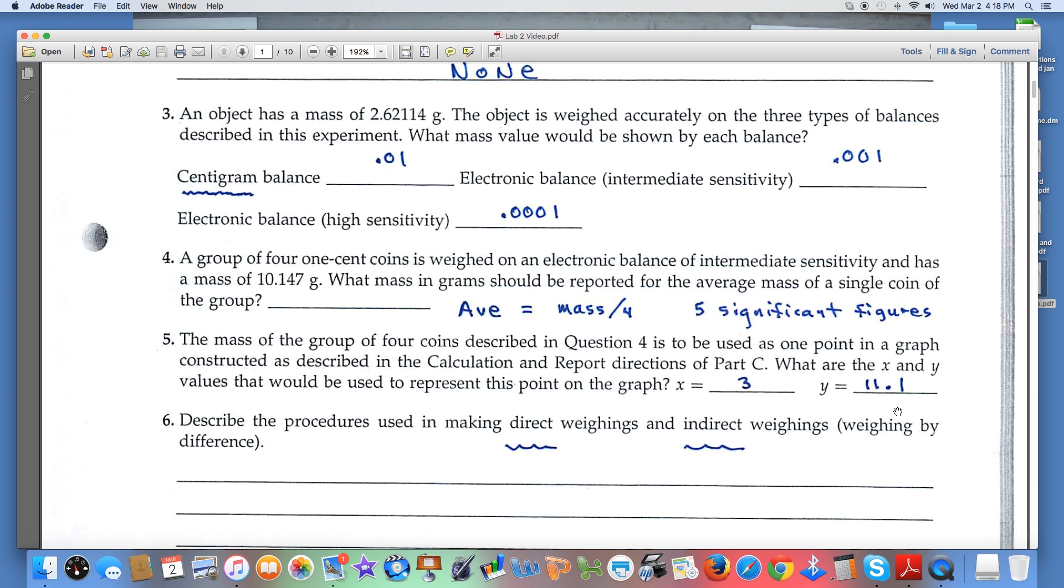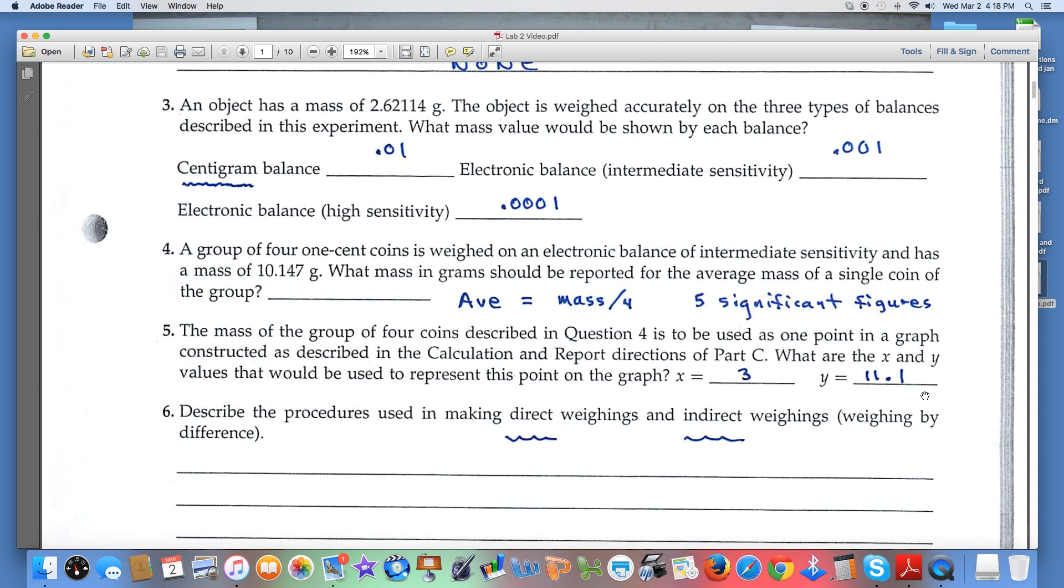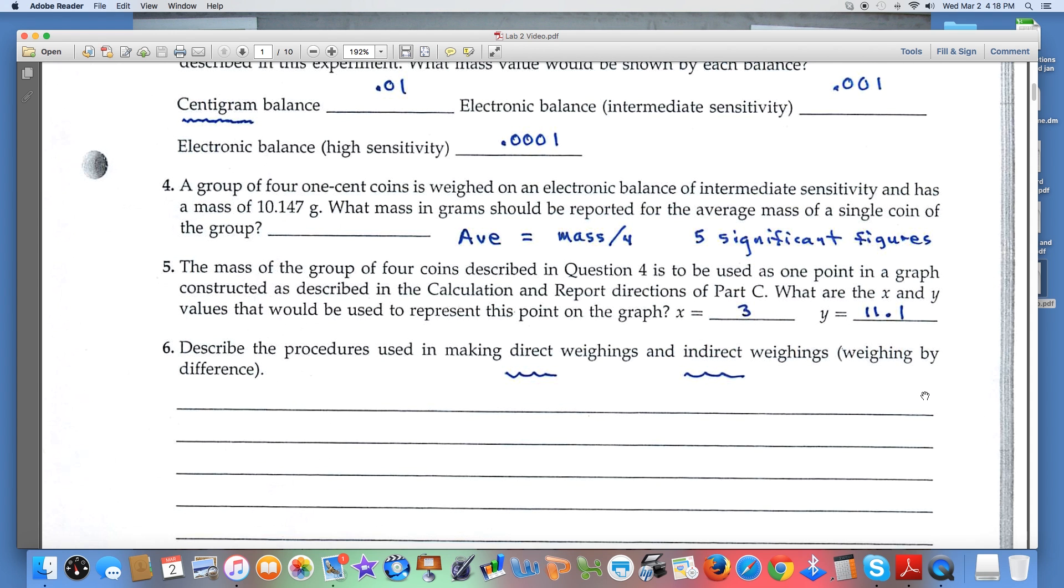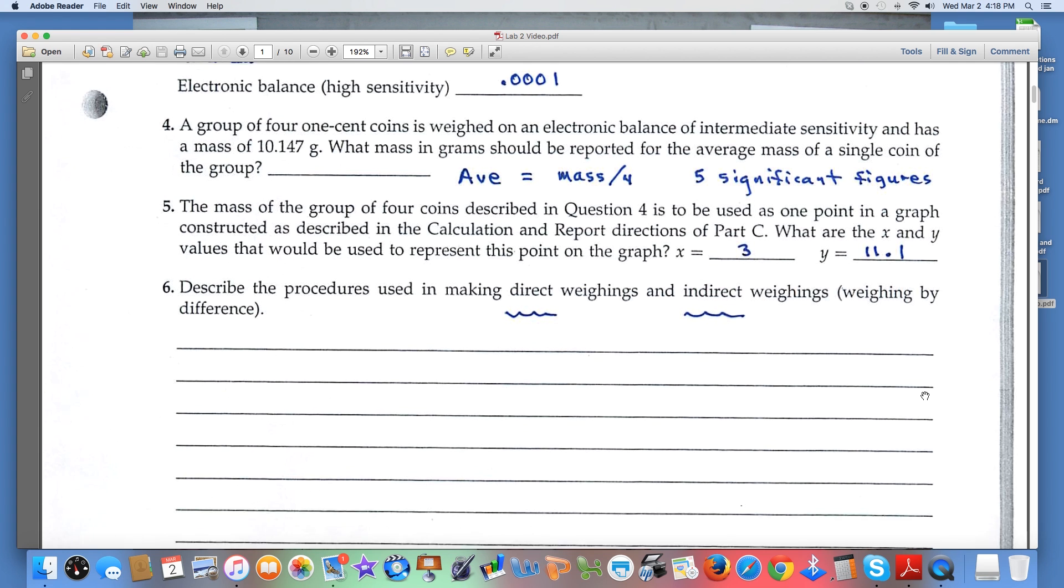Question number six asks you to describe the procedures in direct weighings. That's where you simply place something on a balance and see what the balance records. Indirect weighings are where you would weigh a beaker first, place the object in the beaker, get a total weight and then subtract. That's called indirect or also weighing by difference.